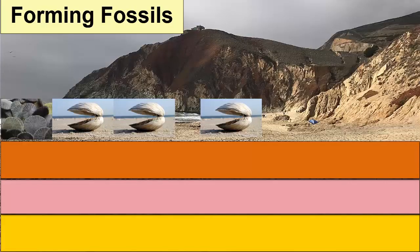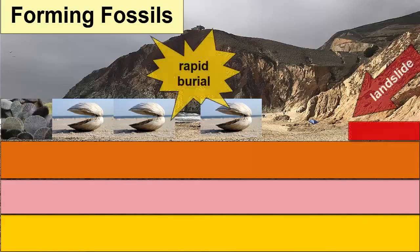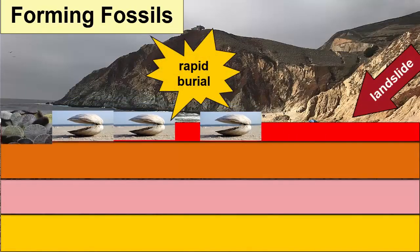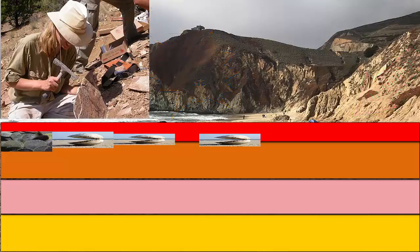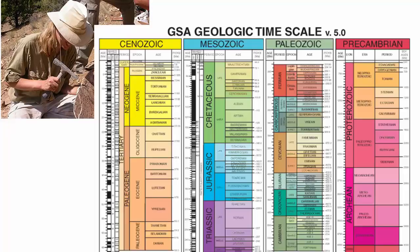To form any of these fossils, we first have to rapidly bury the dead organism or its indirect mark and thus preserve it in rock layers at depth. Paleontologists study the evolution of Earth's life through the study of fossils. They have collectively created the geologic timescale, which breaks Earth history into particular eons, eras, and periods, each given its own name based on rocks studied from that period somewhere on the planet.